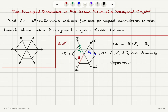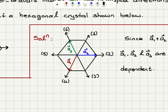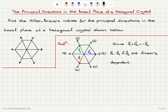It is possible to write all directions in terms of a1 and a2. I have labeled the principal directions one through six. Starting with direction number one, I can write this direction as multiples of minus a1 — I don't need the a2 vector or the a3 vector. So in three-index notation HKL using these three basis vectors, I have [1̄00]. Now I want to convert it to four-index notation.